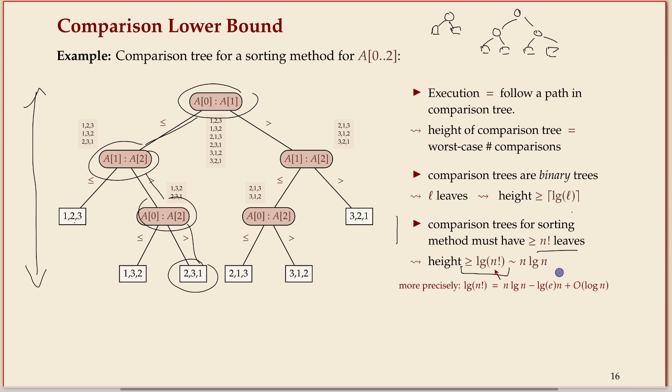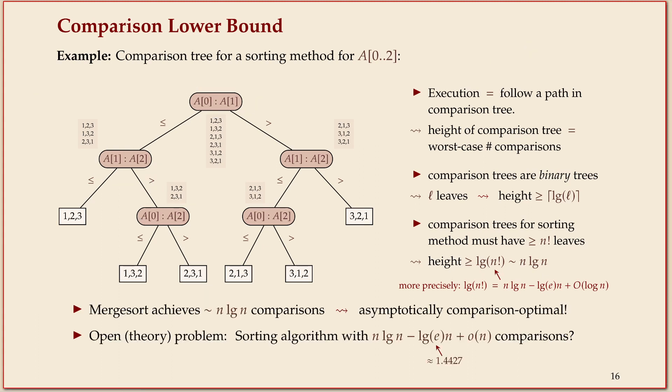So that means, what does that mean? That was the lower bound on the height of the comparison tree, on any comparison tree. And the height was the worst-case number of comparisons. So that means any algorithm, any comparison tree, any algorithm in the comparison model, must do at least n log n comparisons in the worst case.